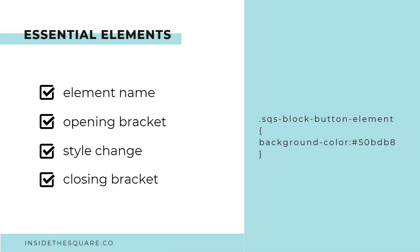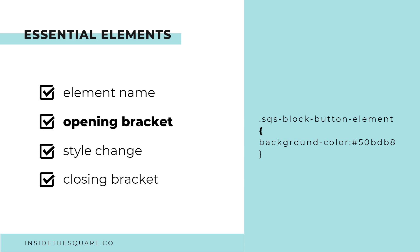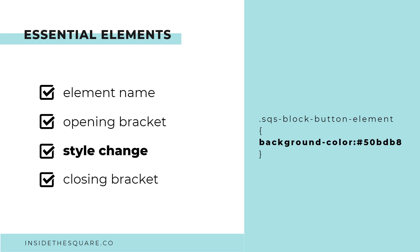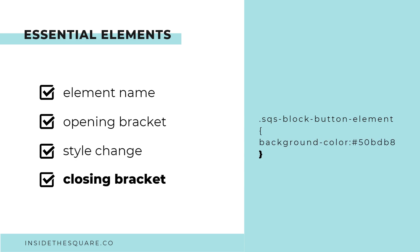So what exactly goes into a custom CSS code? There are four main elements to every code. First is the element name — this tells the browser which specific thing you're about to change, for example, the name for a button. After that, you have an opening bracket, which signals to the browser that you're about to make changes to that element. Then you have the style change — what you're actually changing, like the background color of a button. Finally, you have a closing bracket to let the browser know you're finished writing that code.